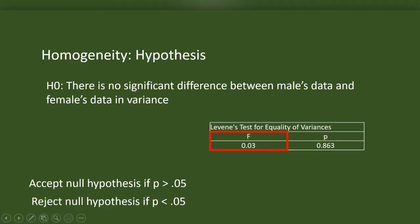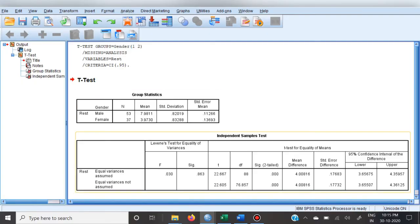This is the result of Levene's F test for equality of variances. The F coefficient indicates whether the data is homogeneous or not. Here, p is greater than 0.05, which means there is no significant difference between males' and females' data variance — in other words, the data is homogeneous. Since the two groups are homogeneous, we will use the t-value in the upper row.